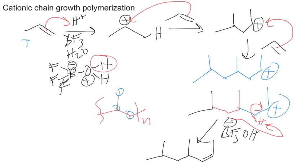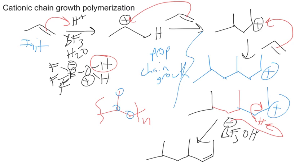Looking back at the different steps: you had an initiation. Even though these aren't radicals, in polymerization we have the same sort of steps as with radicals. All the middle steps are propagations, or chain growth steps. At the end we have termination — when the chain stopped reacting. It's very similar to radical polymerization: initiation, propagation, and then termination.